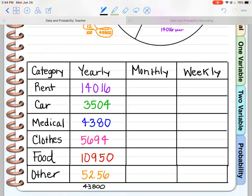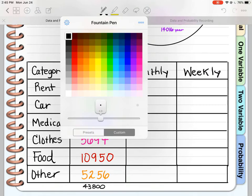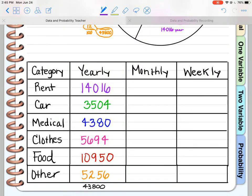To get your monthly amount, I'm going to show you how to do that. I'm going to take the $14,016 and divide that by how many months are in a year, 12. So $14,016 divided by 12 is $1,168. So I am paying $1,168 per month for rent.